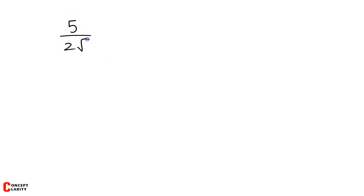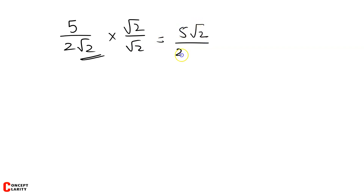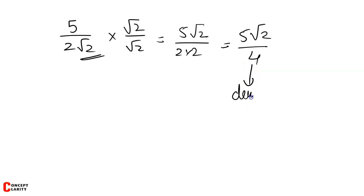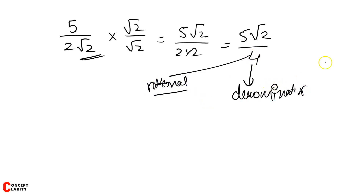Further, for another easy example: 5 upon 2√5. The root is in the denominator, so multiply numerator and denominator by √2. Root 2 into root 2 gives 2, so denominator becomes 2 into 2 = 4. This gives 5√2 upon 4. On the denominator, there is now no irrational number — 4 is a rational number, so the denominator is rationalized. If asked for the rationalizing factor, it is √2.